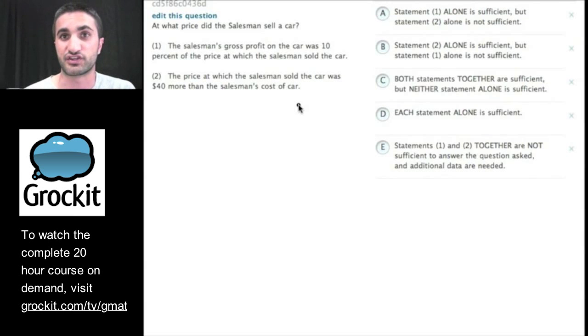We have a data sufficiency question, so what is the first thing we do when we see a data sufficiency question? We change the question's answer choices to 1, 2, 10. First one is sufficient, second one is sufficient, together they are sufficient, either of them are sufficient, neither of them are sufficient.